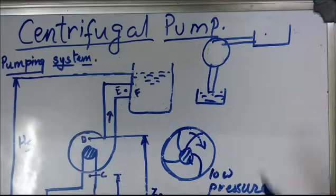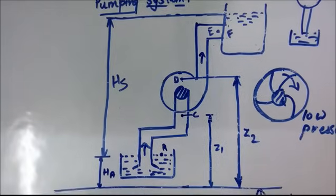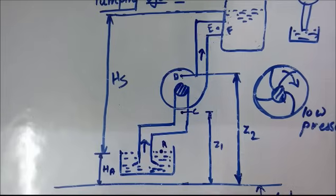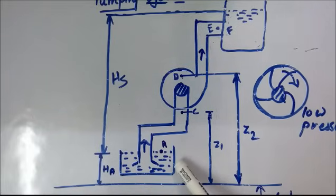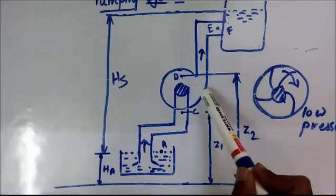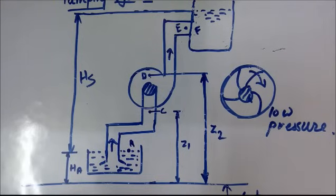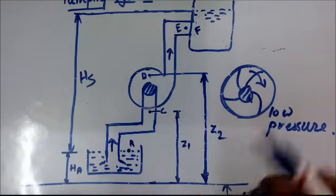Now I'm going to explain a general pumping system - how it basically works. See, this is a reservoir which is at a lower pressure, and this is a reservoir which is at a higher pressure. Your desire is to transmit water from here to here, so you have used a pump. This is a datum level - the base level from which I have taken all the heights or elevations.